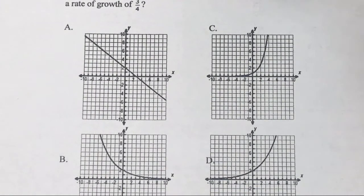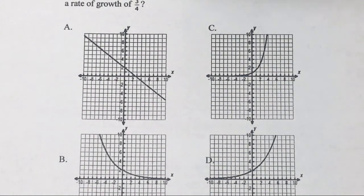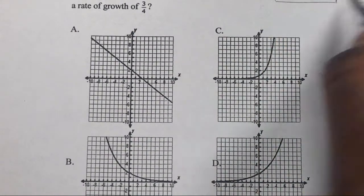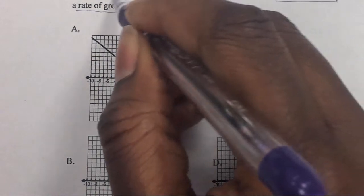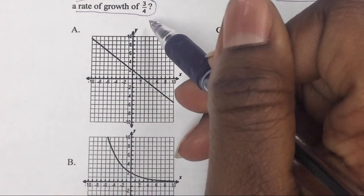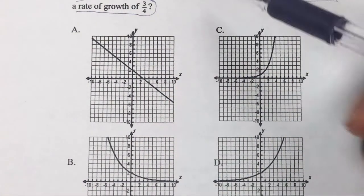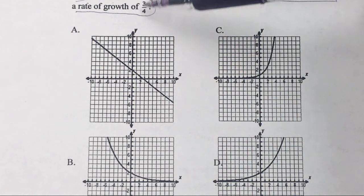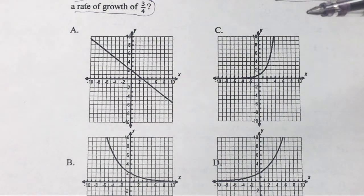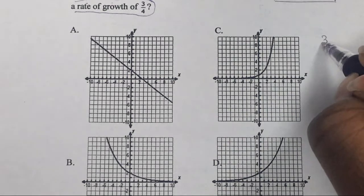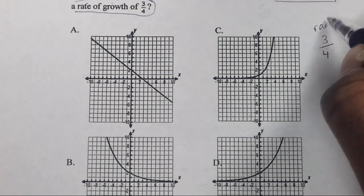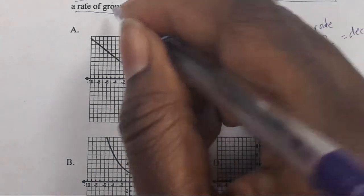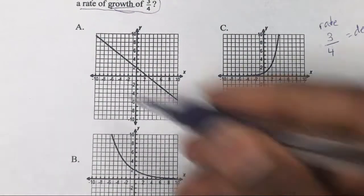Right here, this was a little tricky. It says which graph represents an exponential function with initial value of 2 and a rate of growth of 3/4. Does that sound funny to you? It's a rate of growth of 3/4. That don't sound funny. 3/4, if the rate is 3/4, that should mean that it's decay but they said rate of growth.